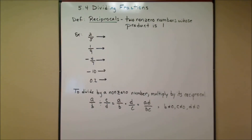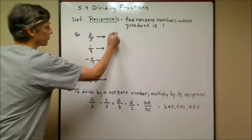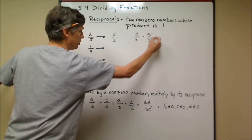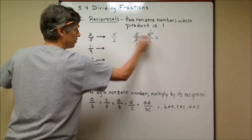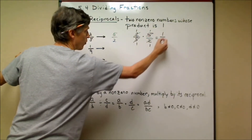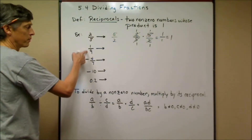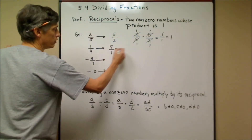Reciprocals are two non-zero numbers whose product is one. The easiest way to think of a reciprocal is to take a fraction, make the denominator the numerator and the numerator the denominator. For example, the reciprocal of 2/5 would be 5/2, and 2/5 times 5/2 — the 5's cross cancel and the 2's cross cancel — gives 1/1, which is 1. So the reciprocal of 1/9 would be 9/1, or just 9.